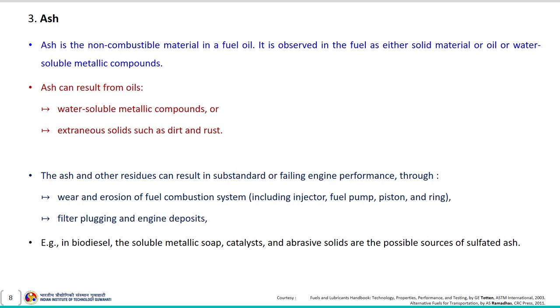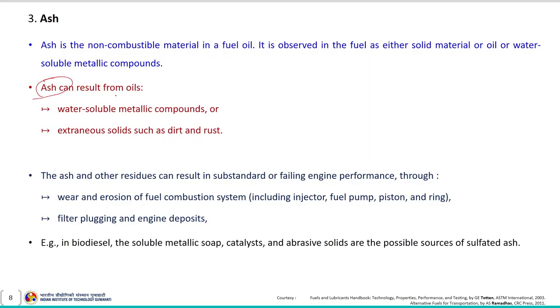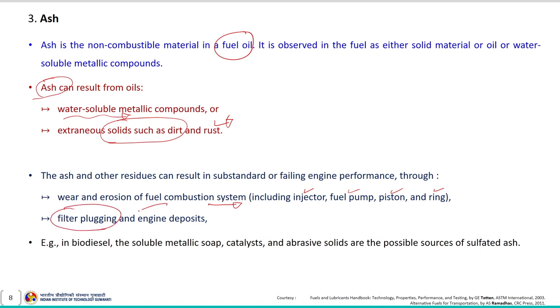Ash is the non-combustible material in the fuel oil, observed as solid material or oil and water-soluble metallic compounds. Ash can result from oils having water-soluble metallic compounds as well as external solids like dirt and rust. Ash and other residues can result in poor engine performance through wear and erosion of the fuel combustion system, including the injector, fuel pump, piston and ring, as well as filter plugging and engine deposits.